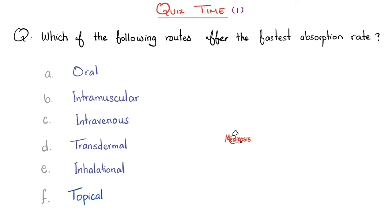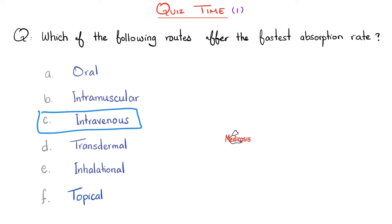Quiz time: Which of the following routes of administration offers the fastest absorption rate? A. Oral, B. Intramuscular, C. Intravenous, D. Transdermal, E. Inhalational, or F. Topical? Some of you said 'easy — intravenous, they have the highest bioavailability, which means the fastest absorption.' This is a mistake. Intravenous medications do not cross any membranes. And by definition, absorption is the crossing of membranes.